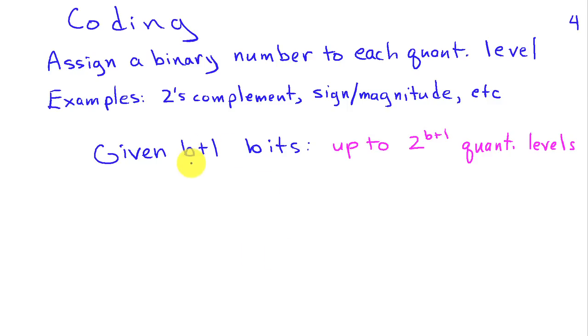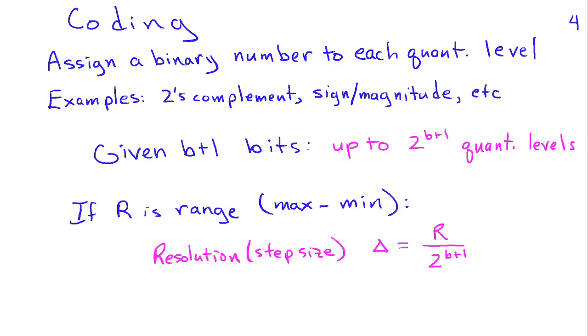If I have a total of b plus 1 bits, then I can represent up to 2 raised to the b plus 1 quantization levels. If my range, that is the maximum value minus the minimum value that I'm willing to represent, is capital R, then my resolution, or my step size, can be related to the number of bits through this expression. So delta becomes the range divided by the number of quantization levels, or 2 to the b plus 1. And this again is for a uniform quantizer.